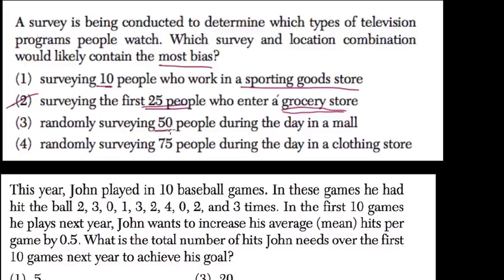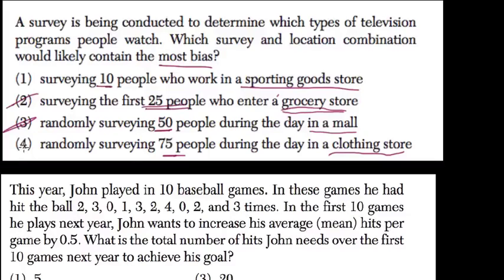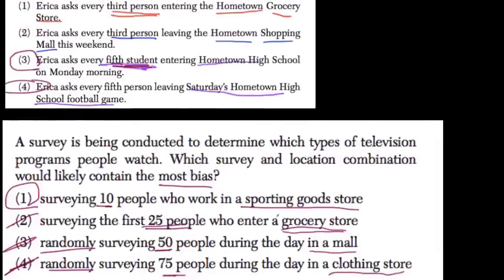Fifty people in the mall is even more people, and lots of people are able to go shopping, so that's less biased than the sporting goods store. Randomly surveying 75 people during the day in a clothing store — well, all people need clothes, so that would be more random than the first survey sampling. Ten people is the most biased. Also notice they don't even use the word 'random' in the first two choices; they only use it in the last two.